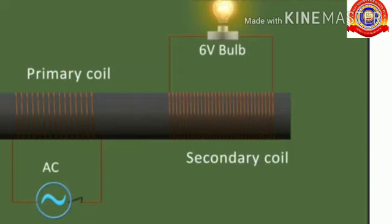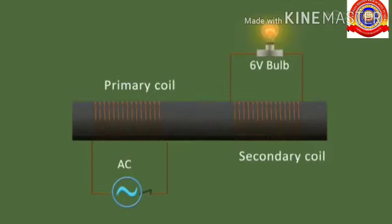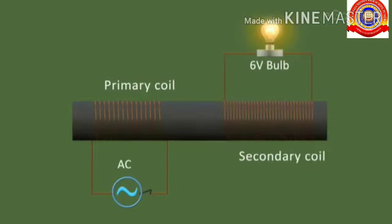In mutual induction there is a relation between the number of turns of the coil and the induced EMF. When the number of turns in the secondary increases, as you can see in the figure, the intensity of the bulb also increases — that means the EMF increases. And when the number of turns in the secondary decreases, the intensity of the bulb decreases — that means the induced EMF decreases.